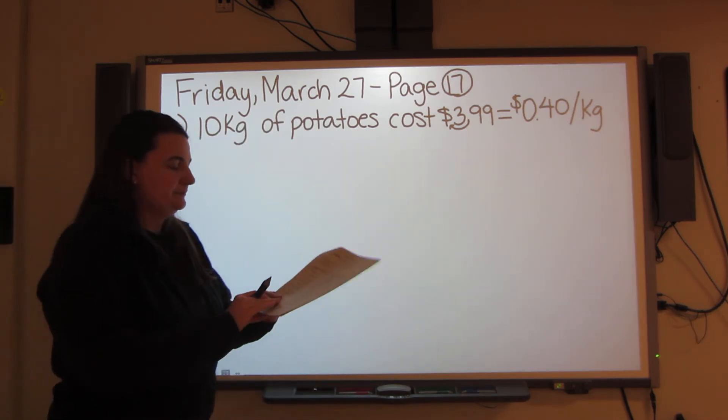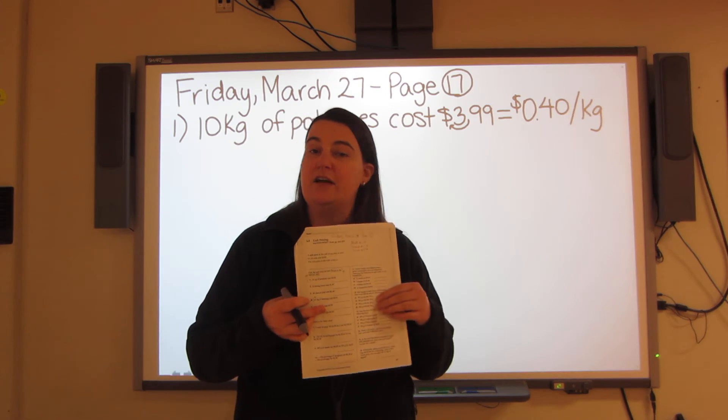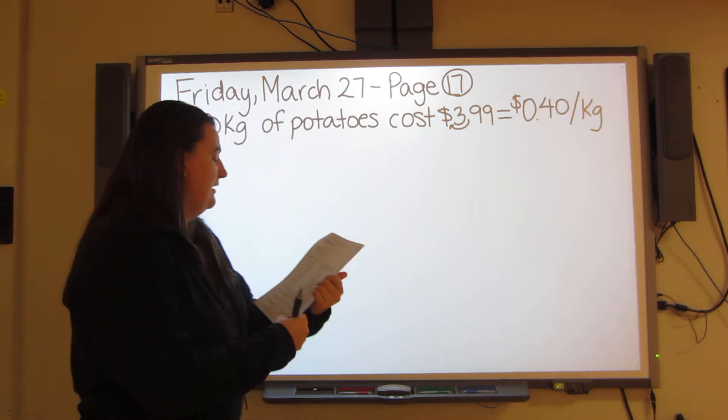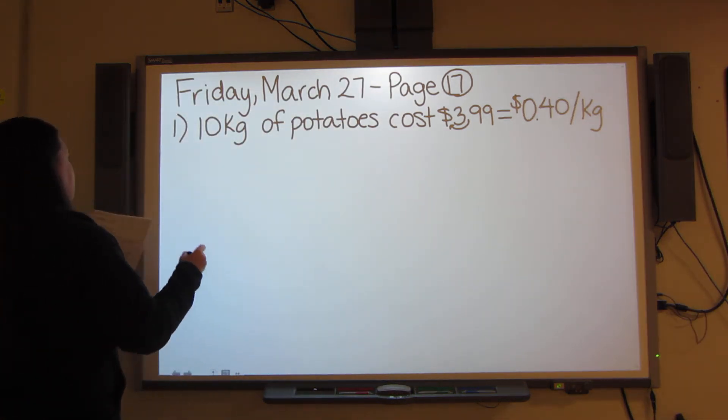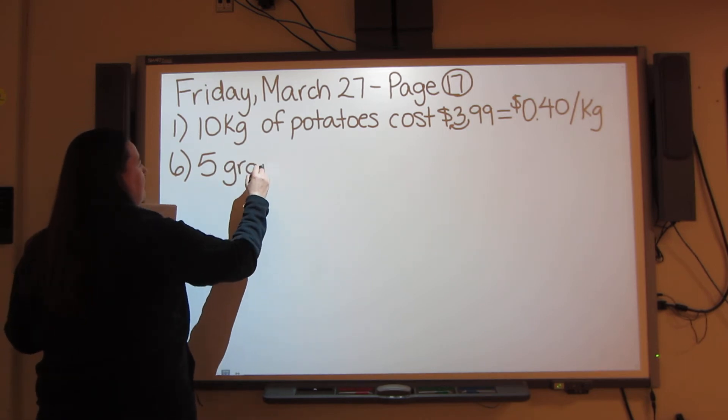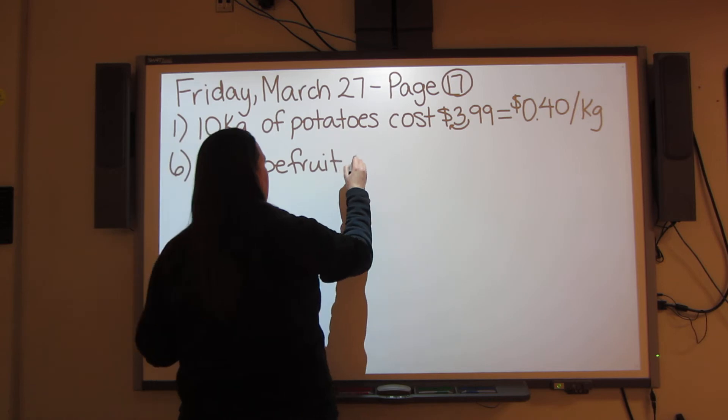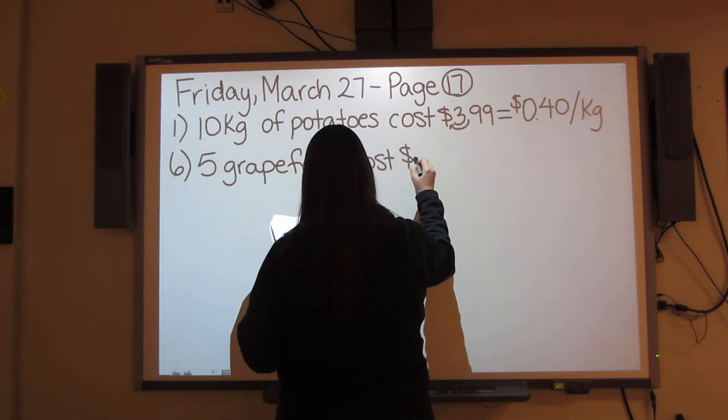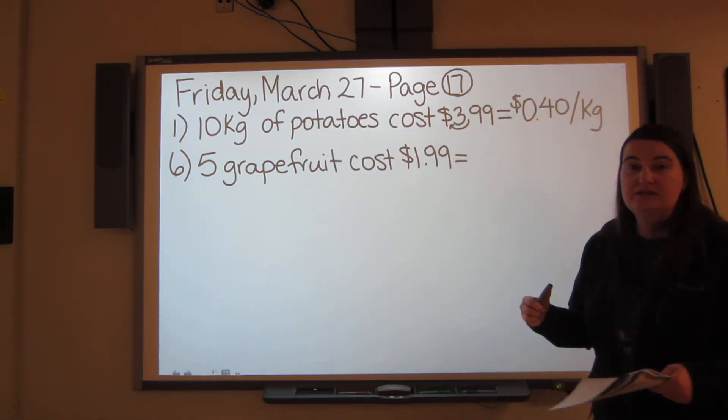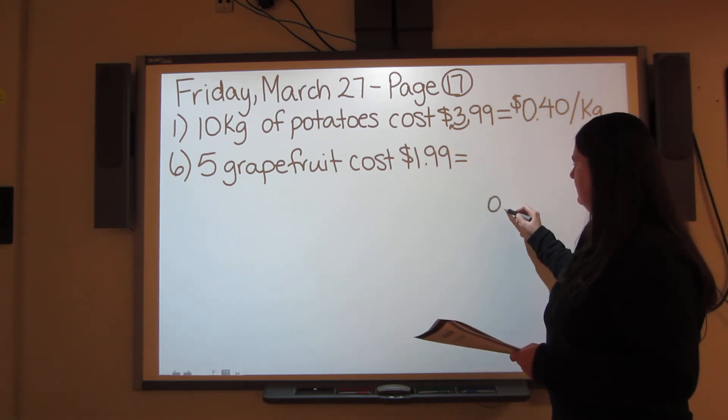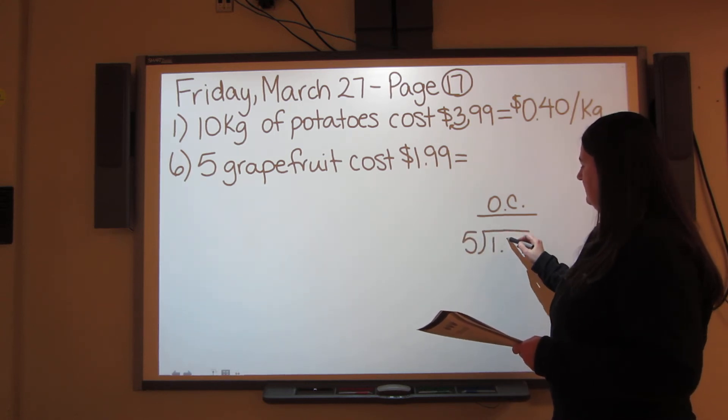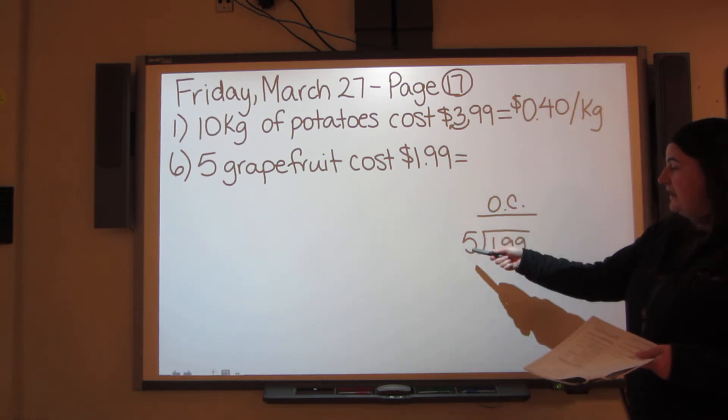Alright, let's talk about, oh, also, don't do number 4. Scratch that out. Don't worry about doing number 4. Unless you use a calculator. If you use a calculator, you can do it. Alright, let's talk about number 6. Number 6, I've got 5 grapefruit. And those 5 grapefruit cost $1.99. So if you're going to do an outside calculation, make sure you give yourself some room. So you take your 5, you divide it into $1.99.